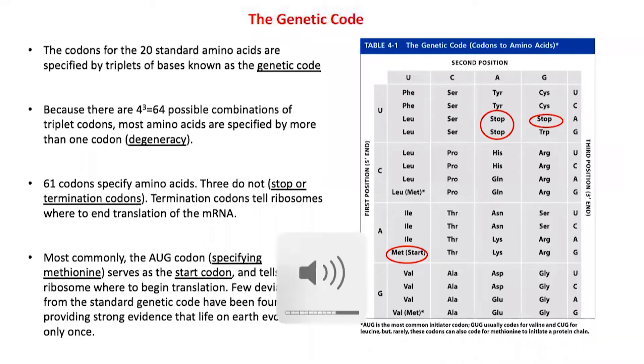A student asks about the last line regarding deviations from the standard genetic code. The instructor responds that there are minor deviations, for example in the start codon.